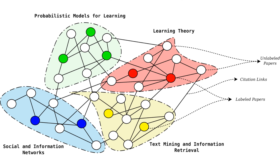We use different colors to annotate the fields they belong to. The task here is: given the labeling of a limited number of nodes in the network, how to determine the labels of the rest of the nodes in the network.